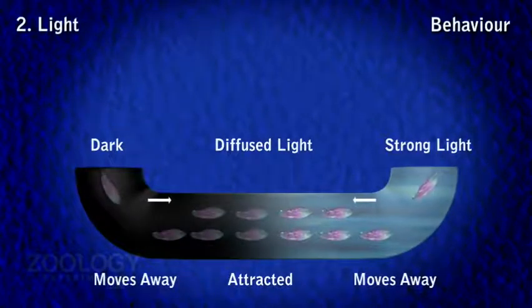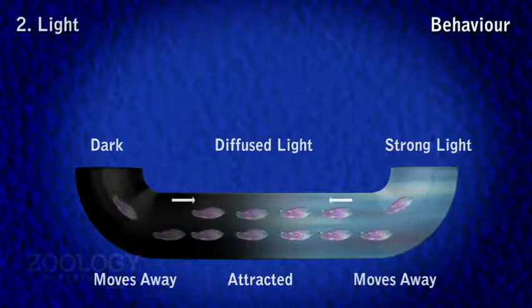Response number two is to light, called phototaxis. Paramecium do not respond to ordinary changes of light, but negative response is shown to strong light, darkness, and ultraviolet rays.